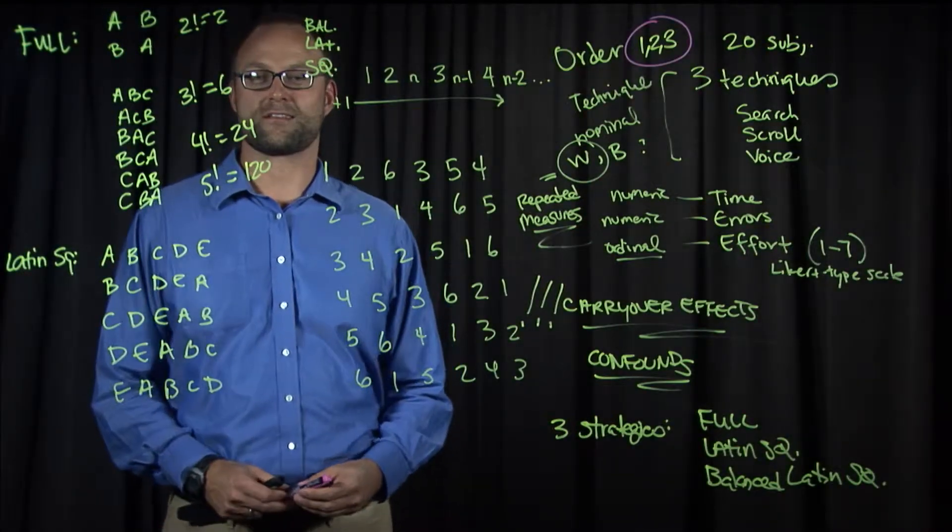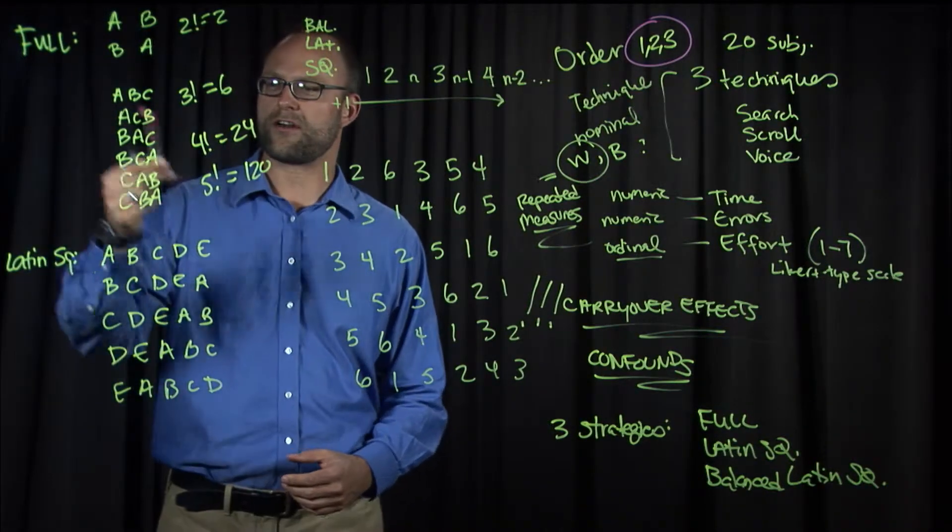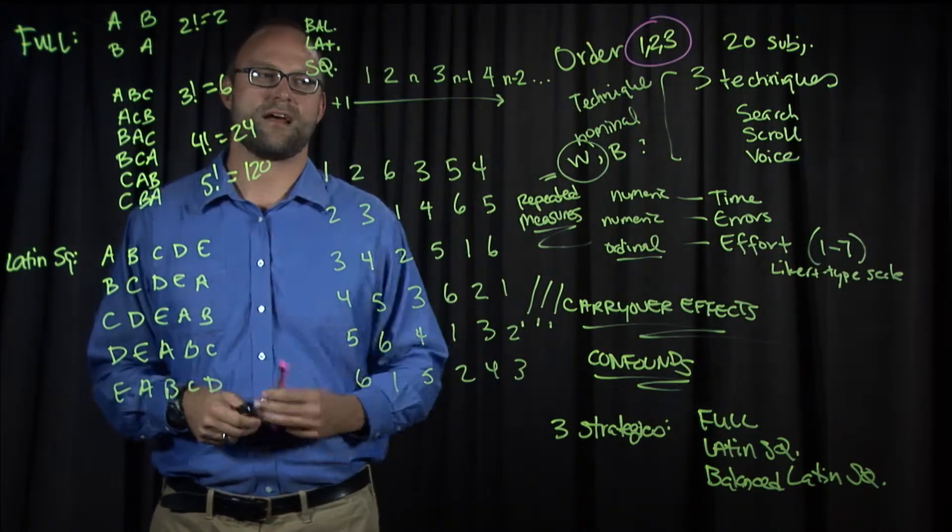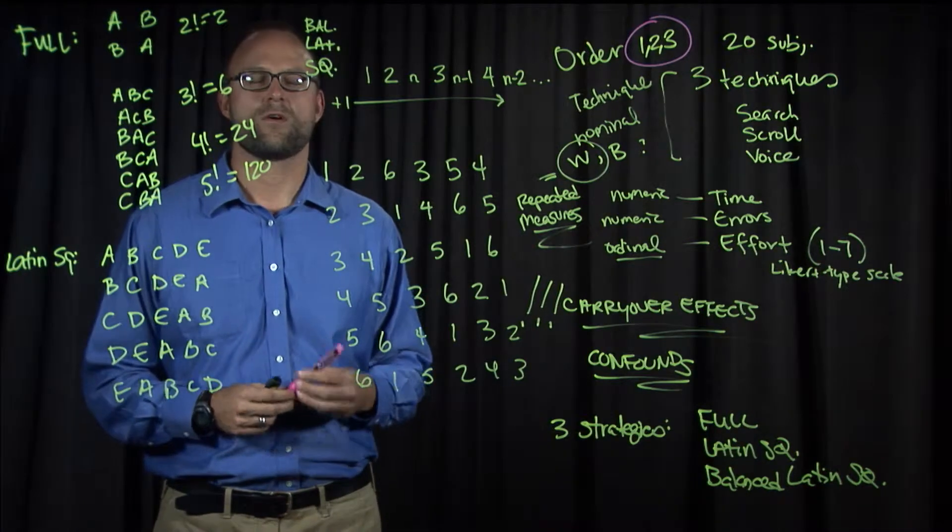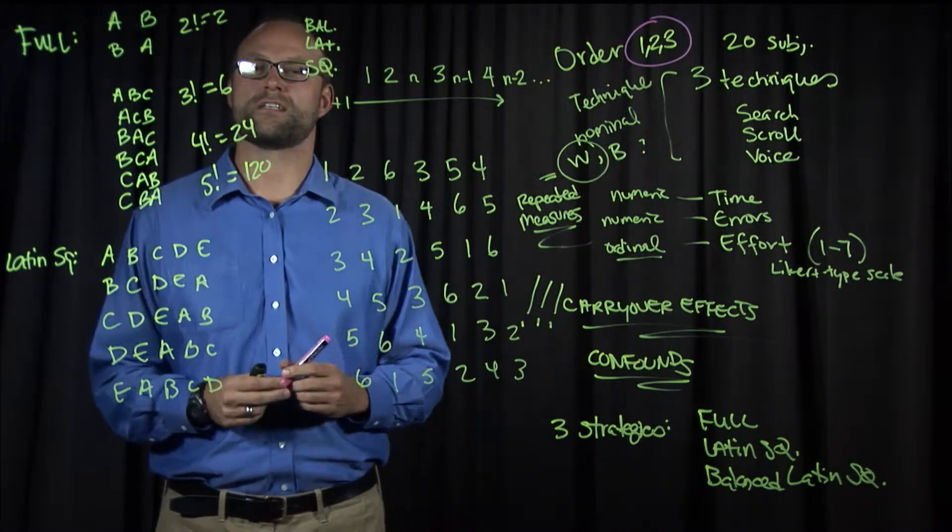We're discussing counterbalancing strategies for within-subjects variables, and we've talked about full counterbalancing, a Latin square. Now I want to discuss a balanced Latin square. The way it works is this.